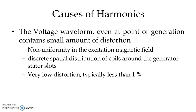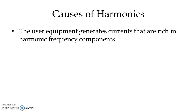The voltage waveform distortion at the point of generation is very low — typically less than 1%. Mainly, the harmonics or distortion is from the load side. The user equipment generates currents that are rich in harmonic frequency components, especially in very large commercial as well as industrial installations.